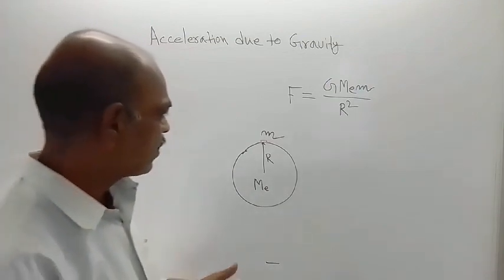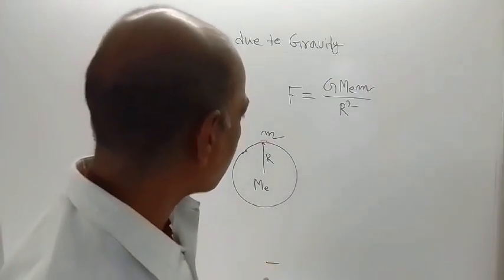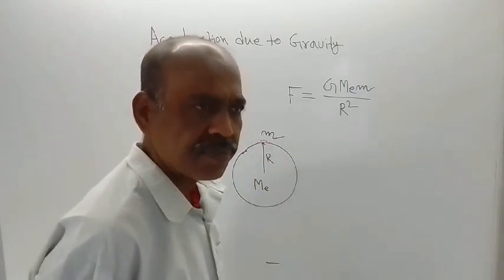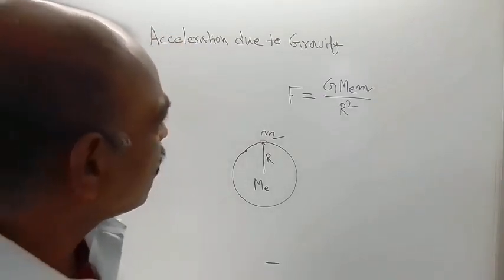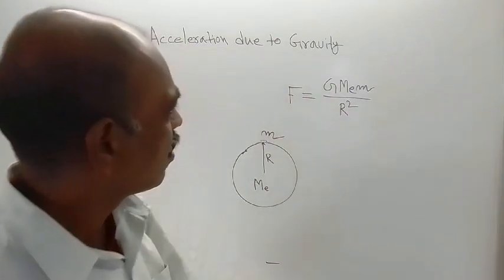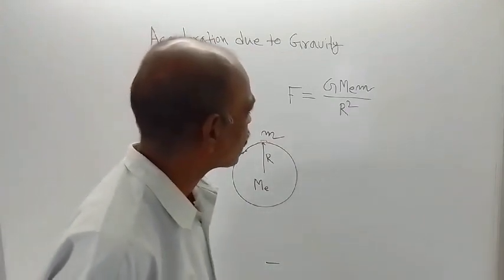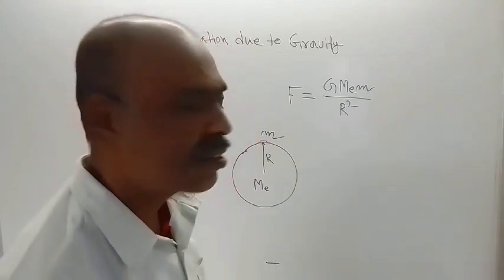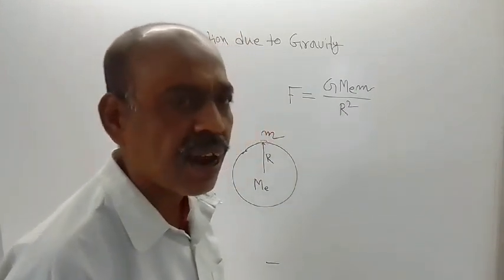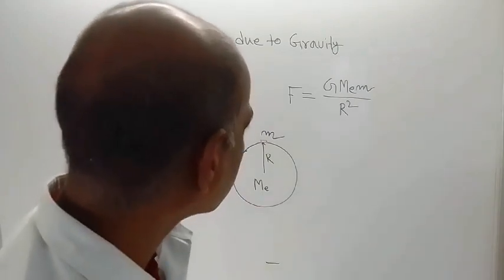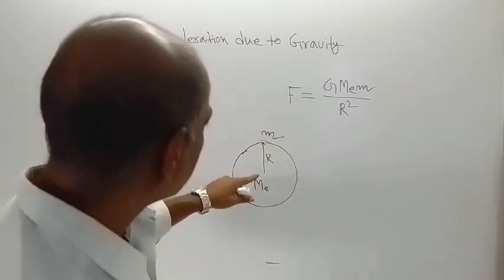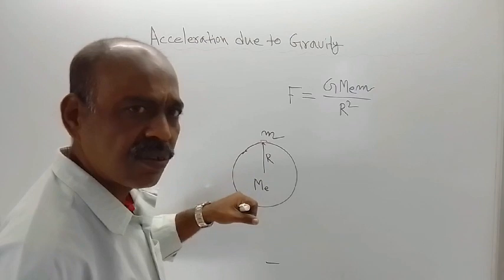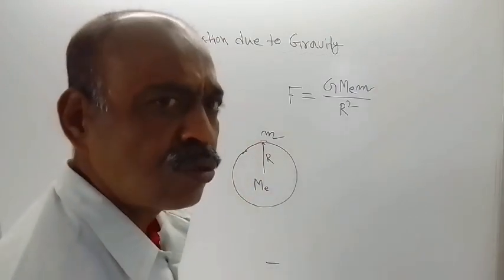It is assumed that the entire mass of the earth is concentrated at the center of the earth. So assuming that, this formula for force of attraction can be written, where G is the universal gravitational constant, Mₑ is the mass of the earth, small m is the mass of the small object, and r is the radius of the earth — because it is the distance between the small mass and the planet Earth, that is the distance between the two objects.